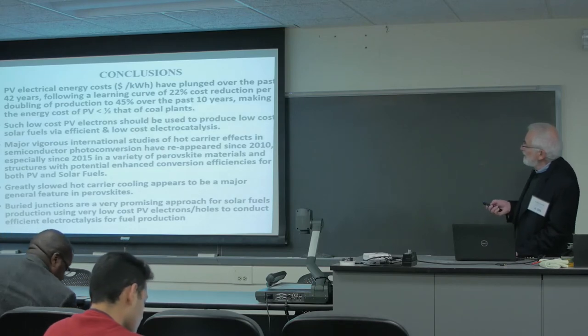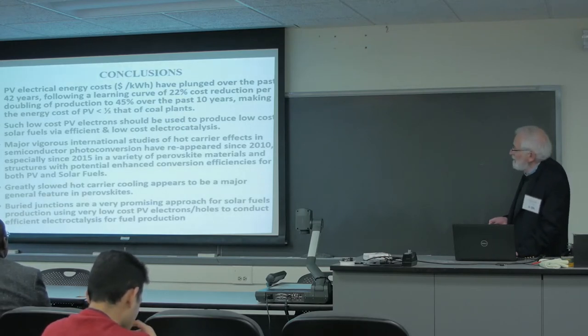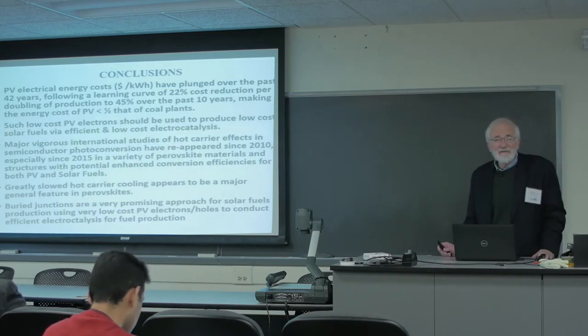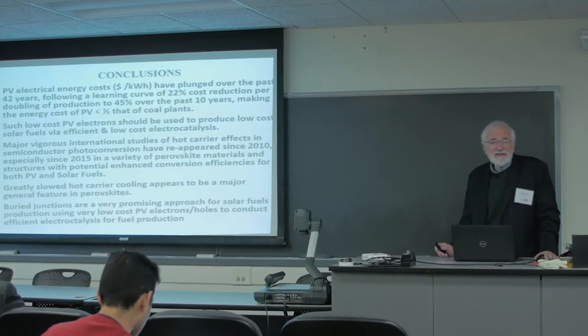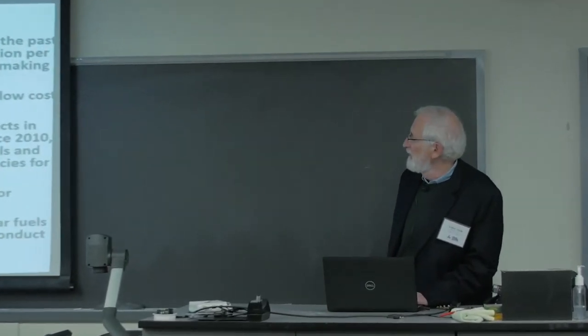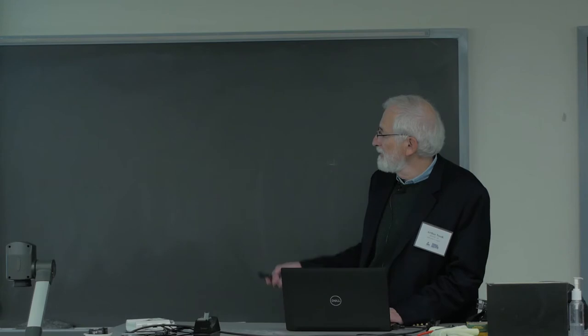And so you could use concentrated light to get that big efficiency for water splitting in this system. So I'll just conclude now by just indicating, as I said, silicon has plunged in price, and it's now in a 45% reduction per doubling of panels. And once you have cheap electrons, you can do electrochemistry with those electrons to make any fuel. So that's my view, is that you should use cheap PV cells with buried junctions to produce fuel. And perovskites look interesting because cooling seems to be very slow in perovskites. So I just thank some of the people that I worked with at NREL. Thanks for your attention.